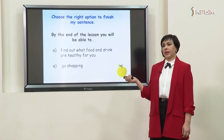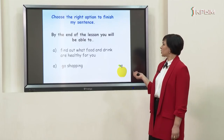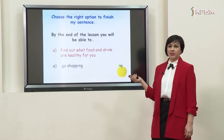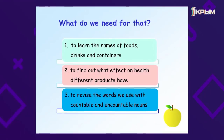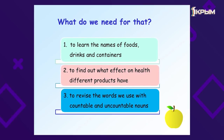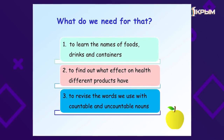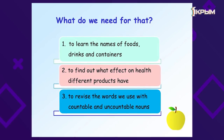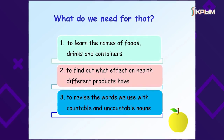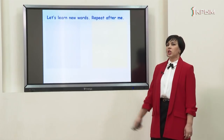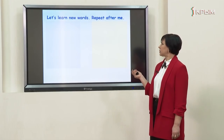By the end of the lesson you will be able to go shopping and choose the right options. Our objectives are: to learn the names of foods, drinks and containers; to find out what effect on health different products have; and to revise the words we use with countable and uncountable nouns. Let's start learning new words.